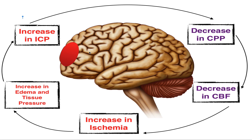There's an equation for cerebral perfusion pressure: MAP, or mean arterial pressure, minus ICP, or intracranial pressure. So cerebral perfusion pressure is equal to MAP minus ICP.